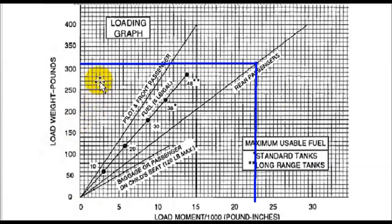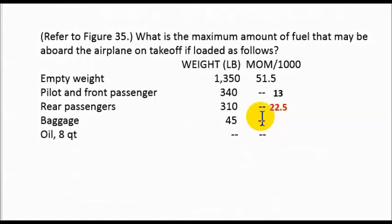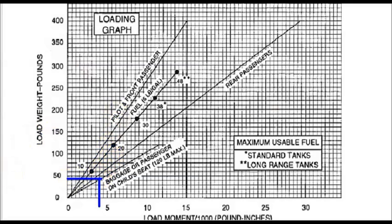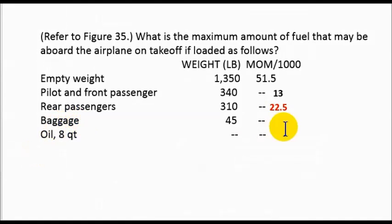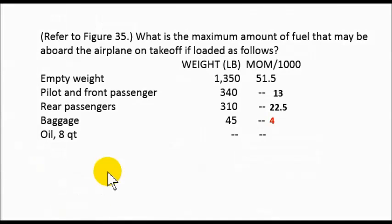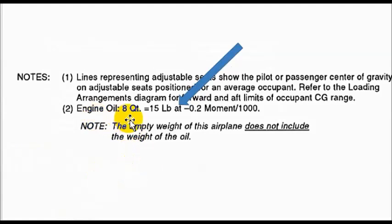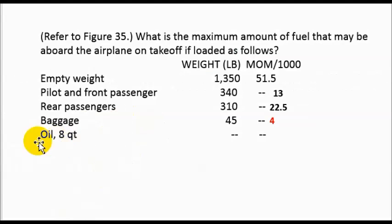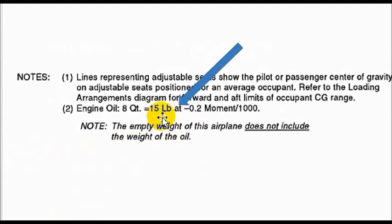Our rear passengers are 310. We come up to 310, cross over to the rear passengers' reference line, come straight down, and get 22.5. Baggage was 45 — we come in at 45, come straight down, and get about 3 or 4. Then back to our note: 8 quarts of oil gives us 15 pounds and a load moment of negative 0.2.